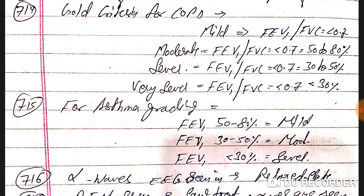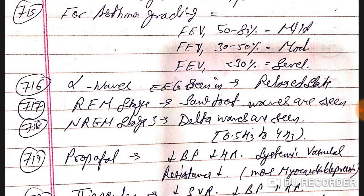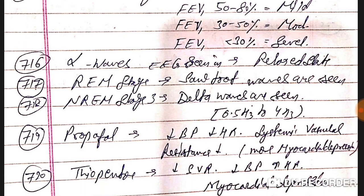For asthma grading, FEV1 of 50 to 80 percent is mild; 30 to 50 percent is moderate; and less than 30 percent is severe.